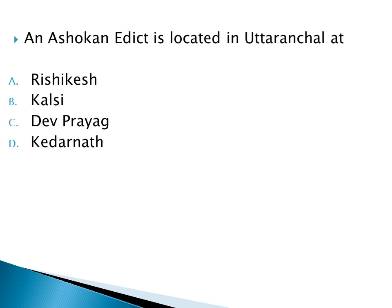An Ashokan edict is located in Uttaranchal at: Option A: Rishikesh, Option B: Kalsi, Option C: Devaprayag, Option D: Kedarnath. The right answer is Option B: Kalsi.